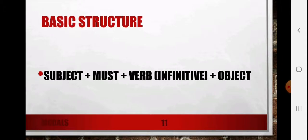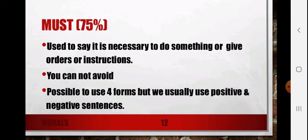The second modal we are going to see is 'must.' The basic structure is: subject + must + verb + object. Must is used to say it is necessary to do something, or to give an order or instruction. Remember, we use 'must' whenever a task is compulsory, necessary, or it comes in the form of instruction or order from a higher authority — you cannot avoid that task. Whenever a task is unavoidable, we should use 'must.'